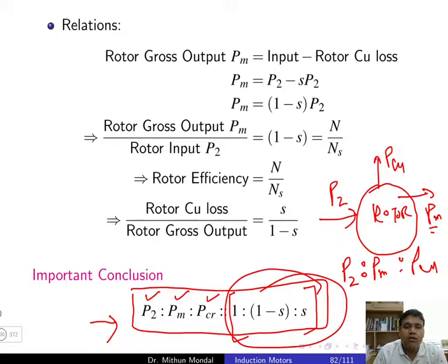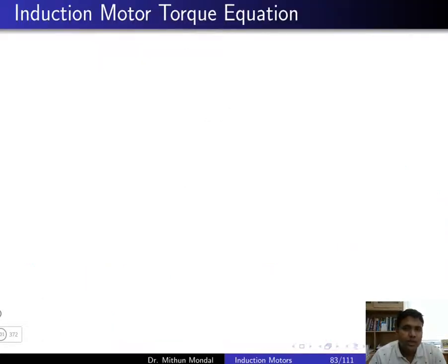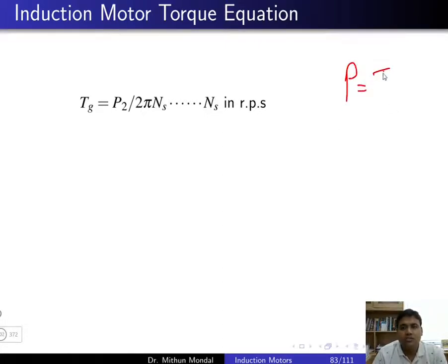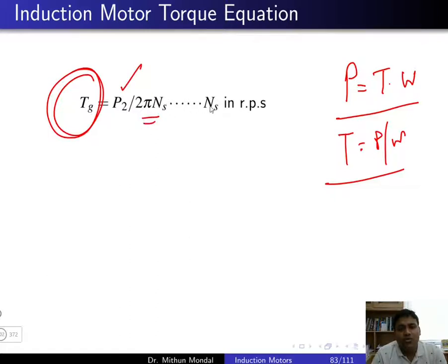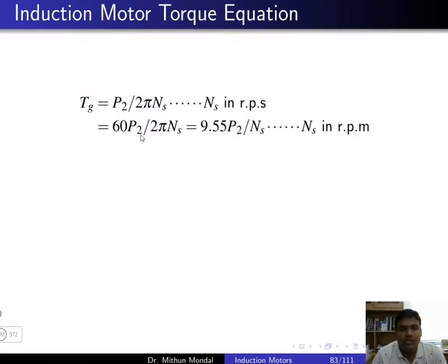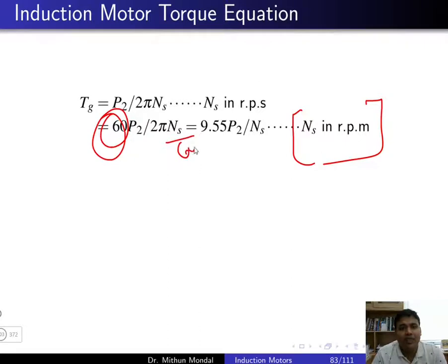For the induction motor torque equation, using power = torque × omega: gross torque Tg = P2 / (2π × Ns) when Ns is in RPS. When Ns is in RPM, the equation becomes Tg = 9.55 × P2 / Ns, since dividing by 60 brings 60 into the numerator.